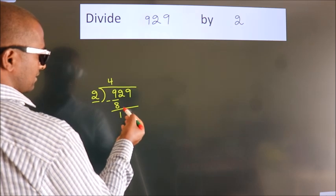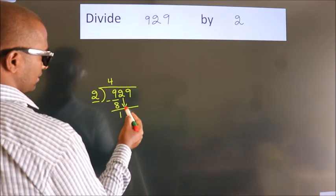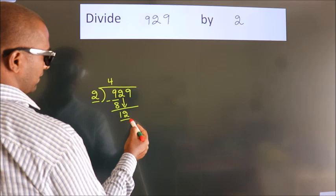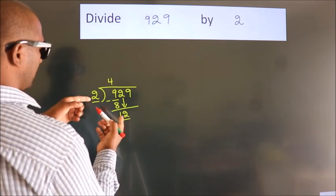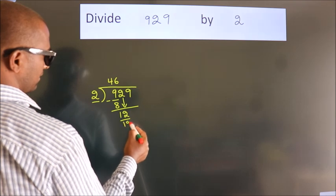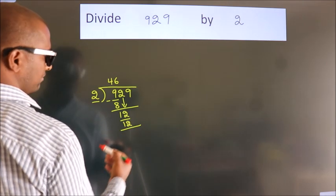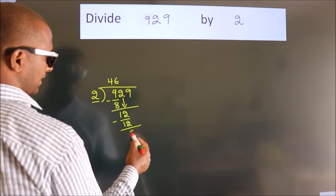After this, bring down the next number. So 2 down, so 12. When do we get 12? In the 2 table, 2 times 6 is 12. Now we subtract. We get 0.